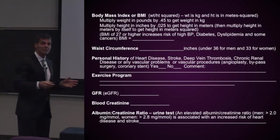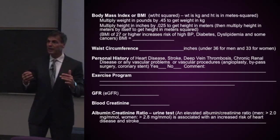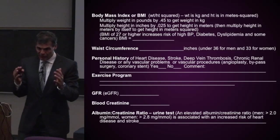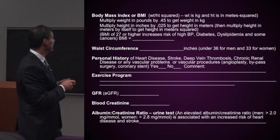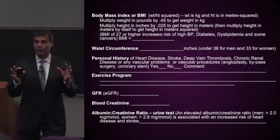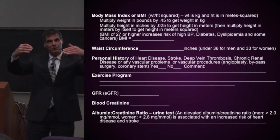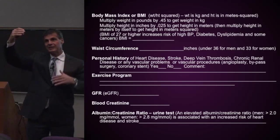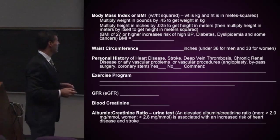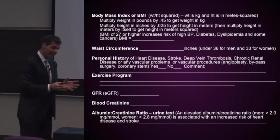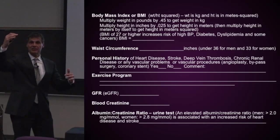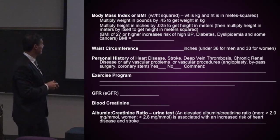What's their body mass index — their weight in kilograms over their height in meters squared? I'll show you the exact form. Once a person has a body mass index above 27, their risk of having high blood pressure, diabetes, dyslipidemia, and certain cancers increases significantly. I want to see a body mass index definitely below 27.